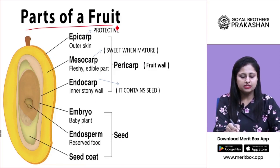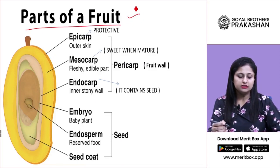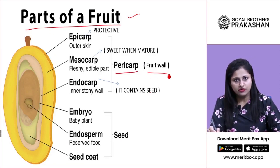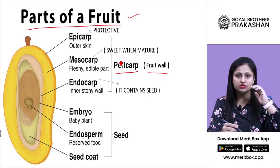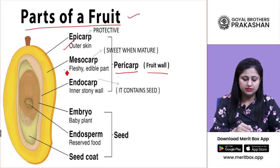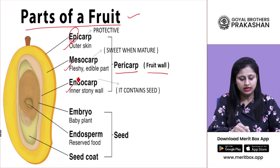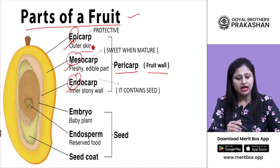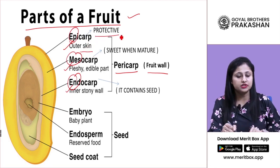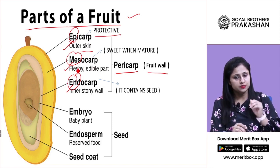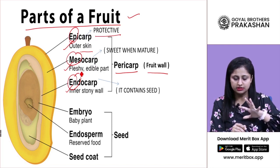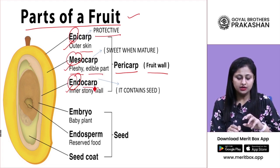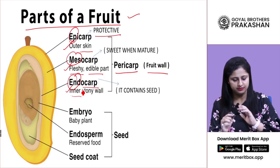Parts of a fruit: taking the example of mango, the pericarp or fruit wall is divided into three sub-layers — epicarp, mesocarp, and endocarp. Epi means upper, endo means inner, and meso means middle. The epicarp forms the outer skin and is protective in nature. The mesocarp is the middle fleshy and edible part. The endocarp is a stony, very hard wall.